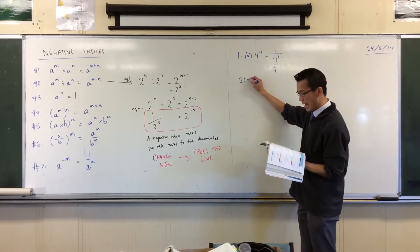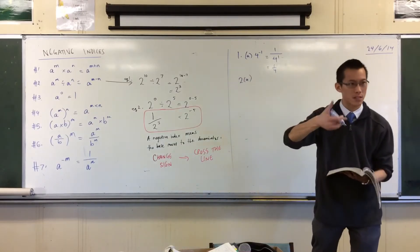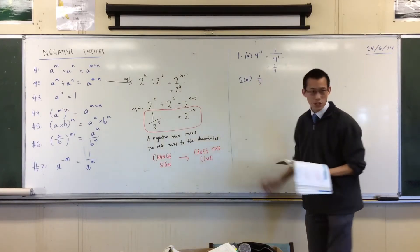Now you can see in 2a, they're asking you to go in the opposite direction. So you've got a fifth, now it's a bit tricky.